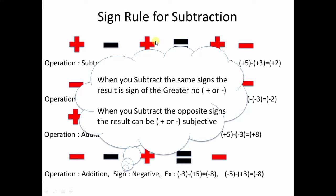To summarize the subtraction rules: when you subtract the same signs — positive minus positive, or negative minus negative — the sign can be positive or negative depending on the sign of the greater number. Remember to solve the sign multiplication first before picking the sign. When you subtract opposite signs — positive minus negative gives a fixed positive, and negative minus positive gives a fixed negative. I hope you liked this video — share it and leave feedback in the comments. Until the next video, take care and be safe.